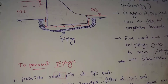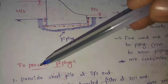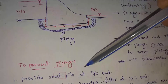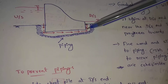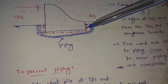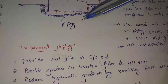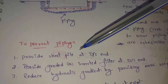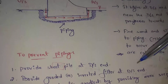To prevent piping, we also have some methods. First, provide sheet piles at the downstream end. Downstream side — lengthy sheet piles are provided. This gives maximum control over piping.